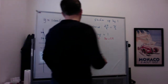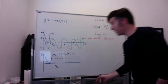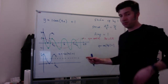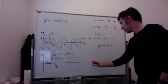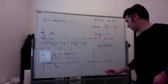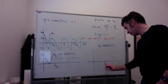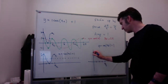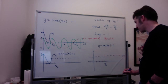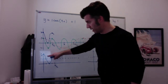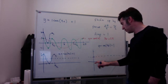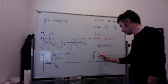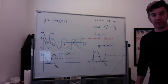If I were graphing sine of 4x plus 1 instead, the period would still be π/2, since it's 2π/4. I break π/2 into four equal quarters. The new middle line is y = 1. Sine starts in the middle, then goes up to the top, back to the middle, then to the bottom, then back to the middle. That's one period of sine of 4x plus 1.